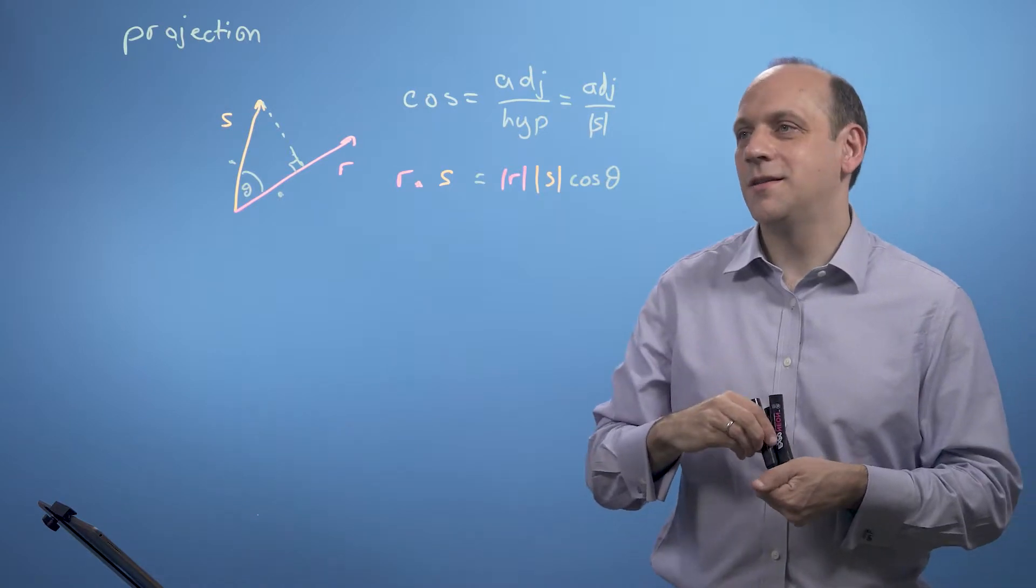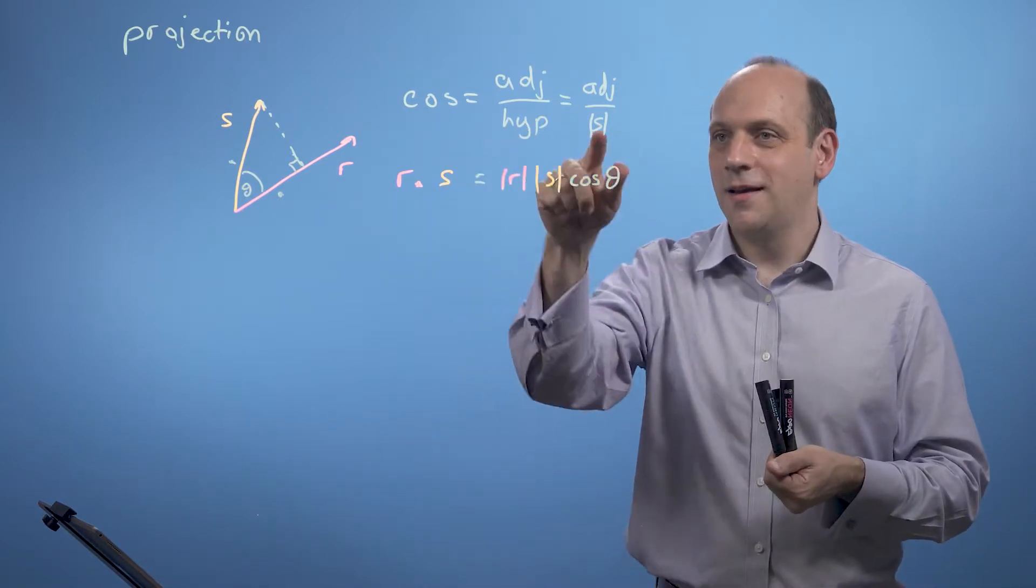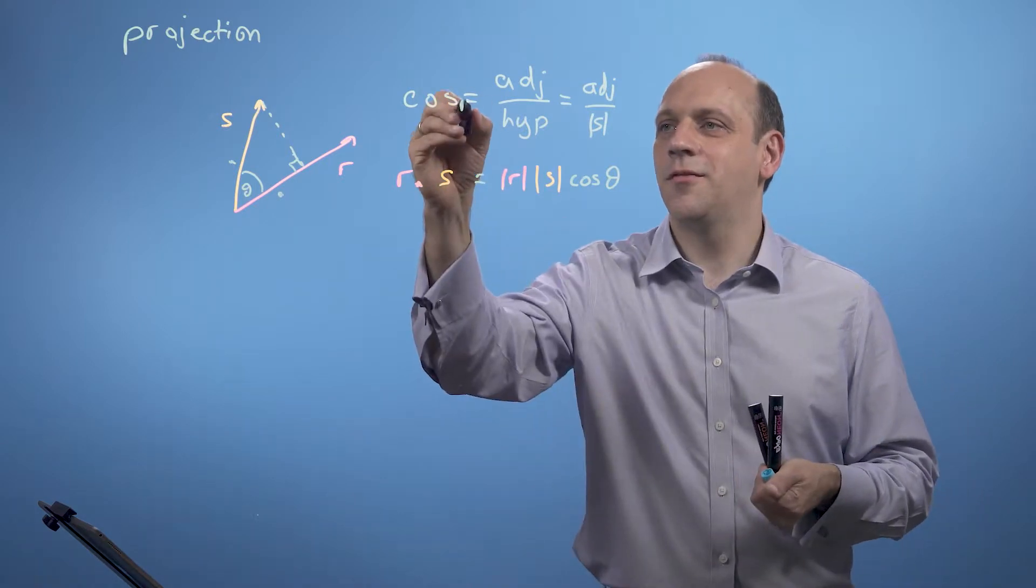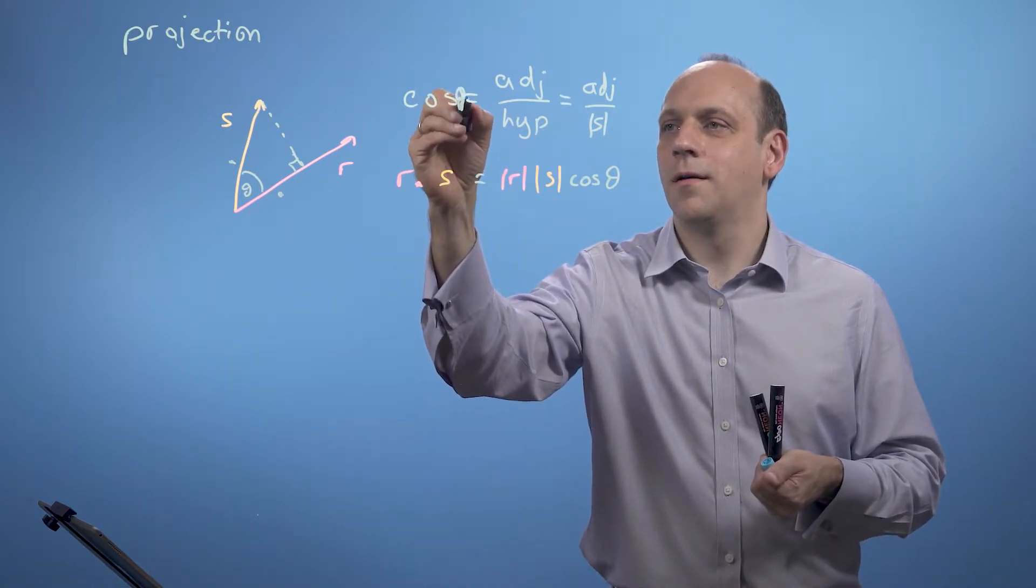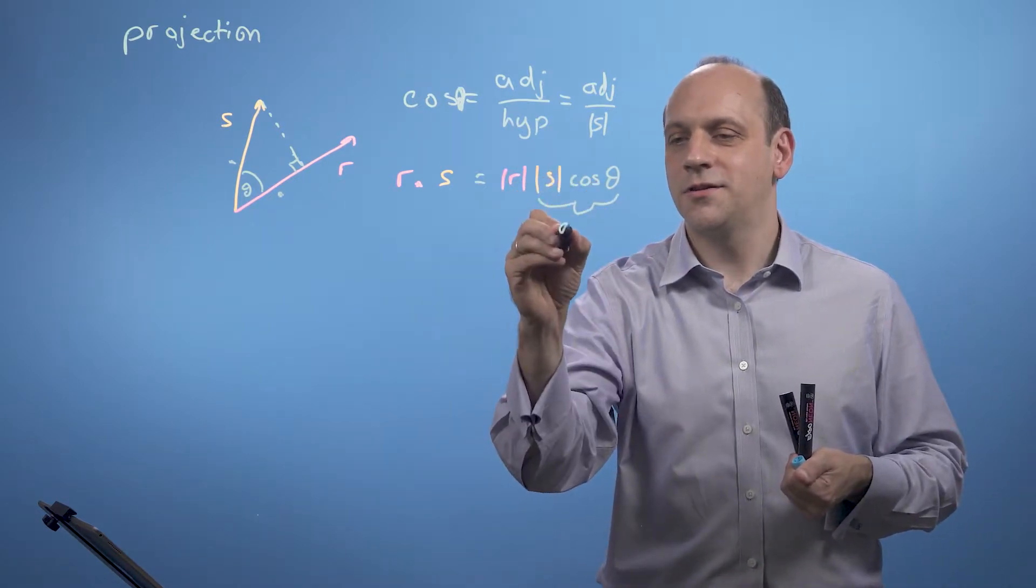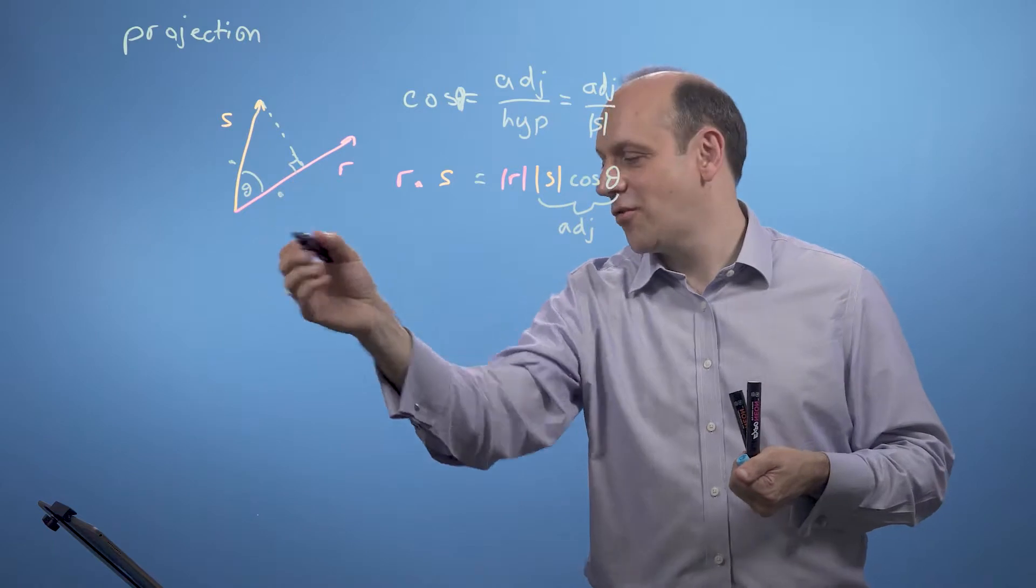But the size of s times cos theta, if I pull s up here, I just need to put my theta in there. Cos s cos theta is just that adjacent side. So that's just that adjacent side here in the triangle.